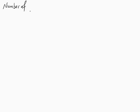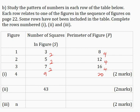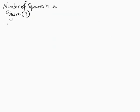For the number of squares in a figure S, we know from our table that the first term A is 3 and the common difference D is 2.